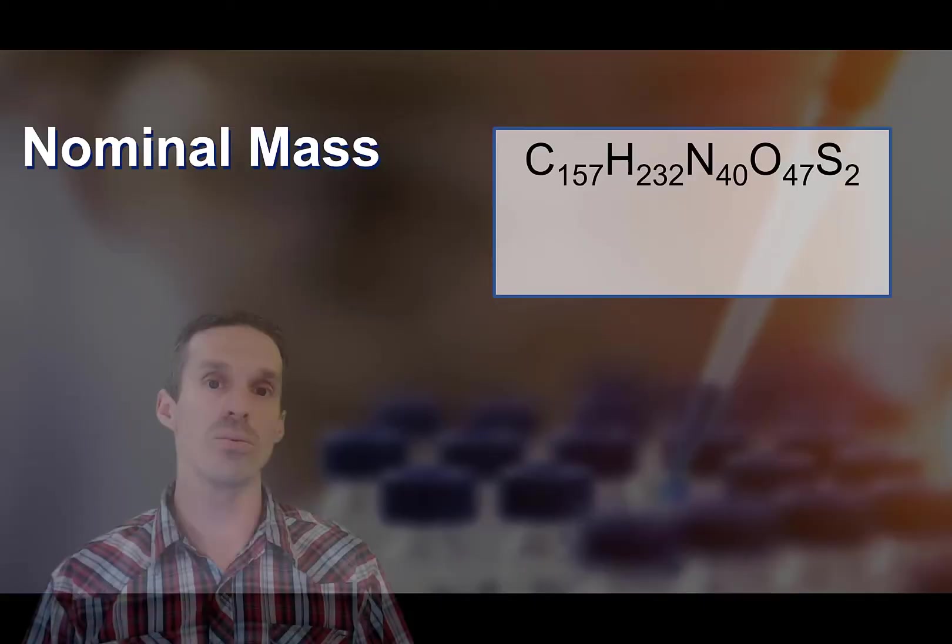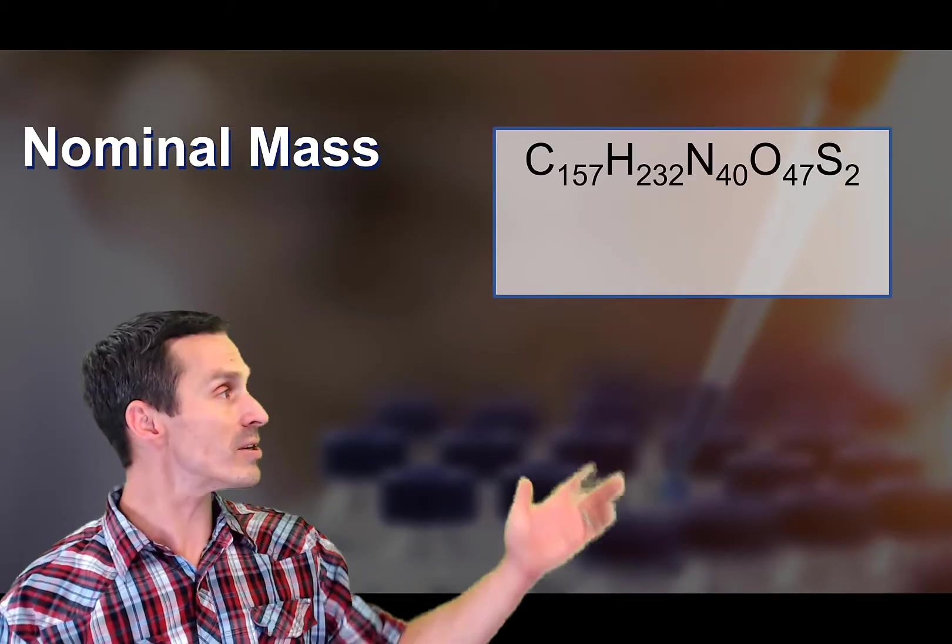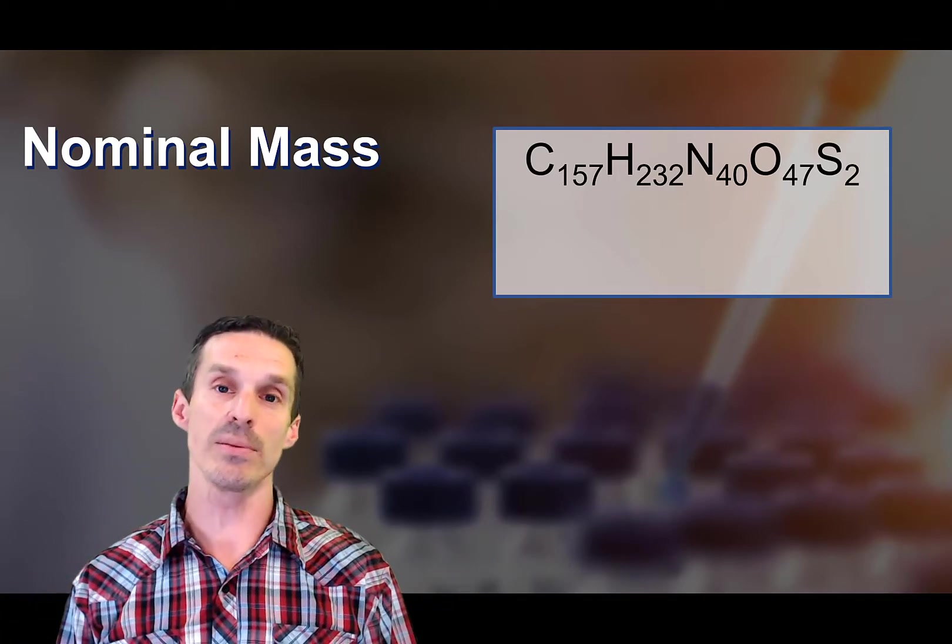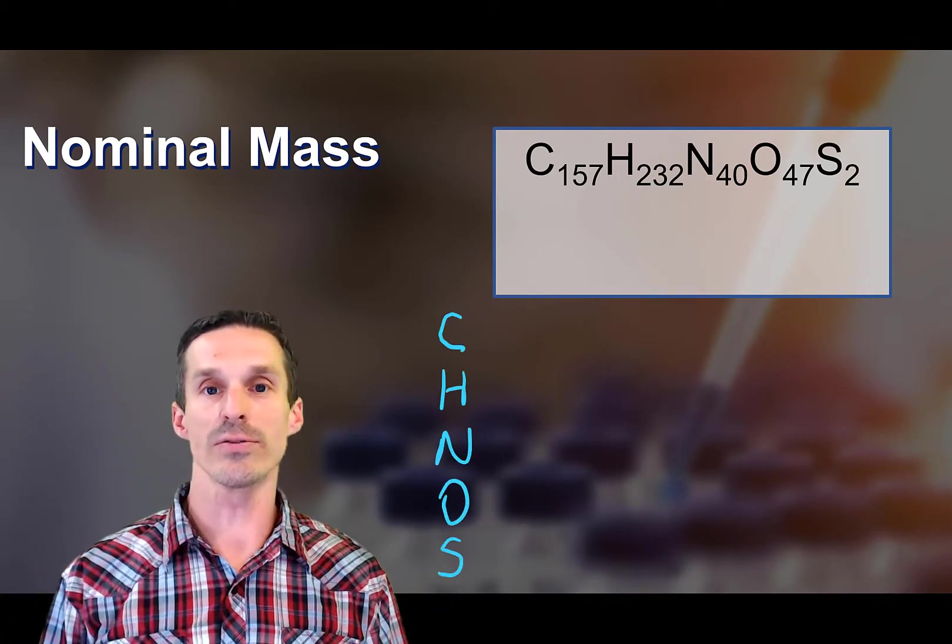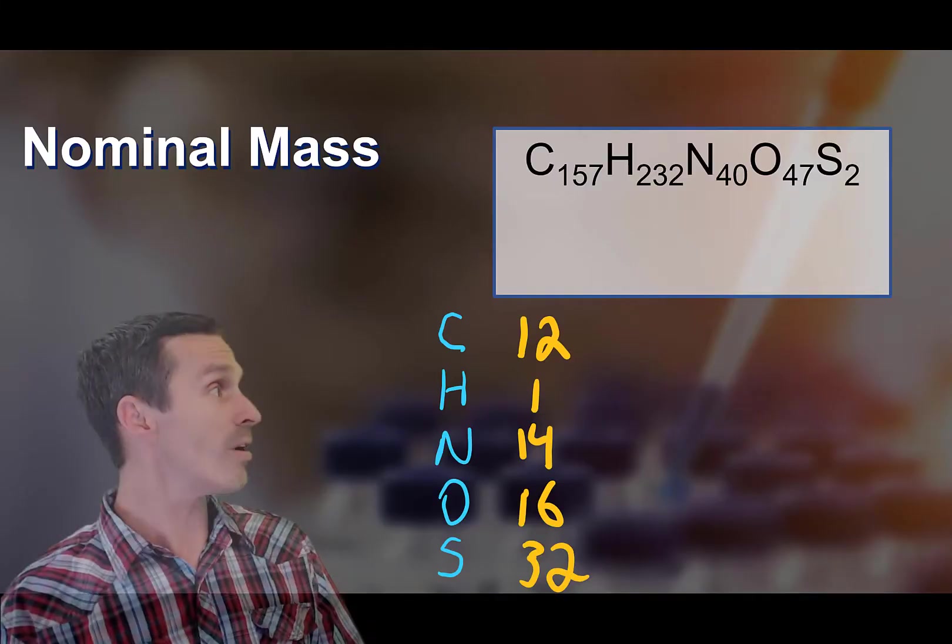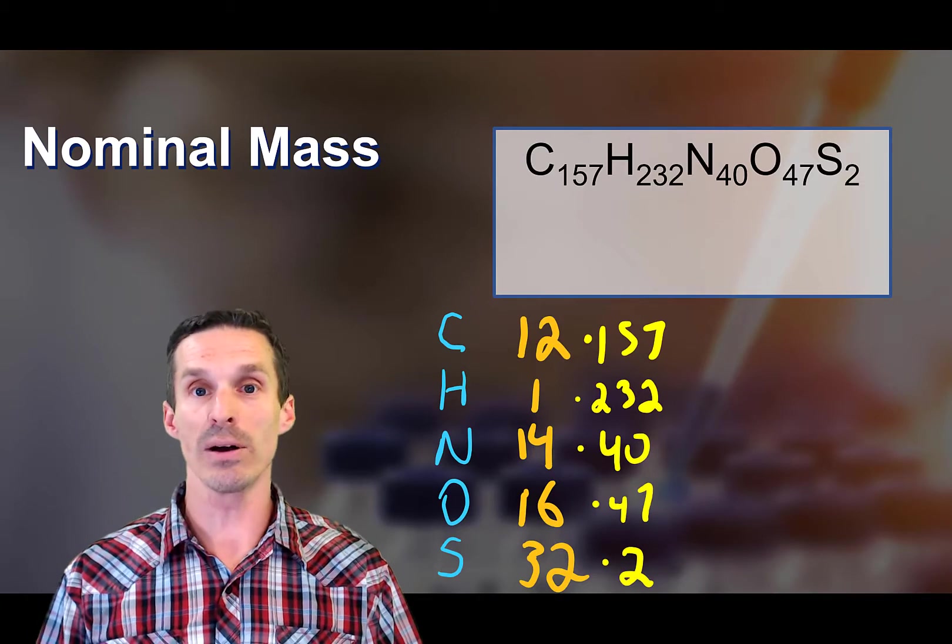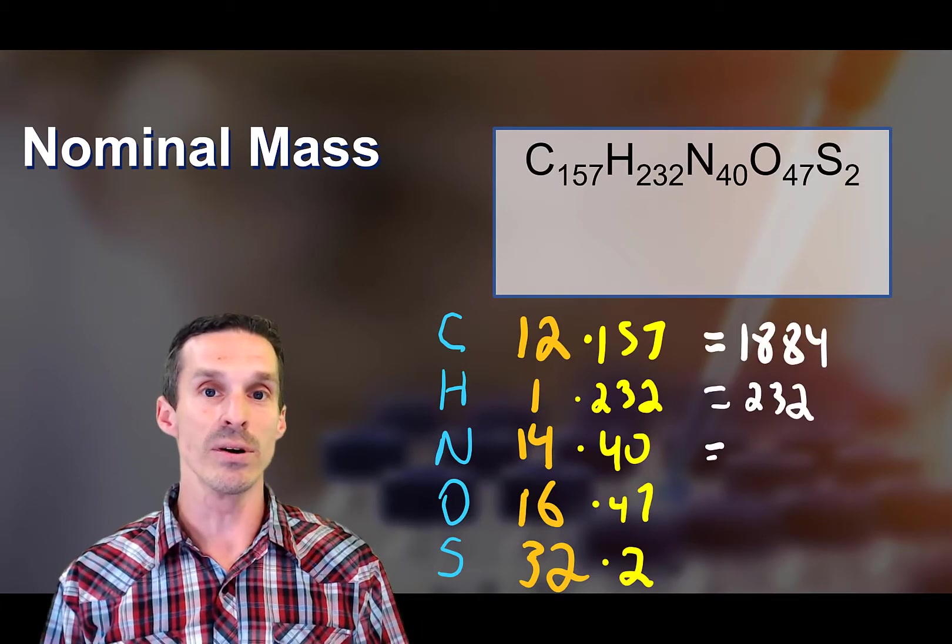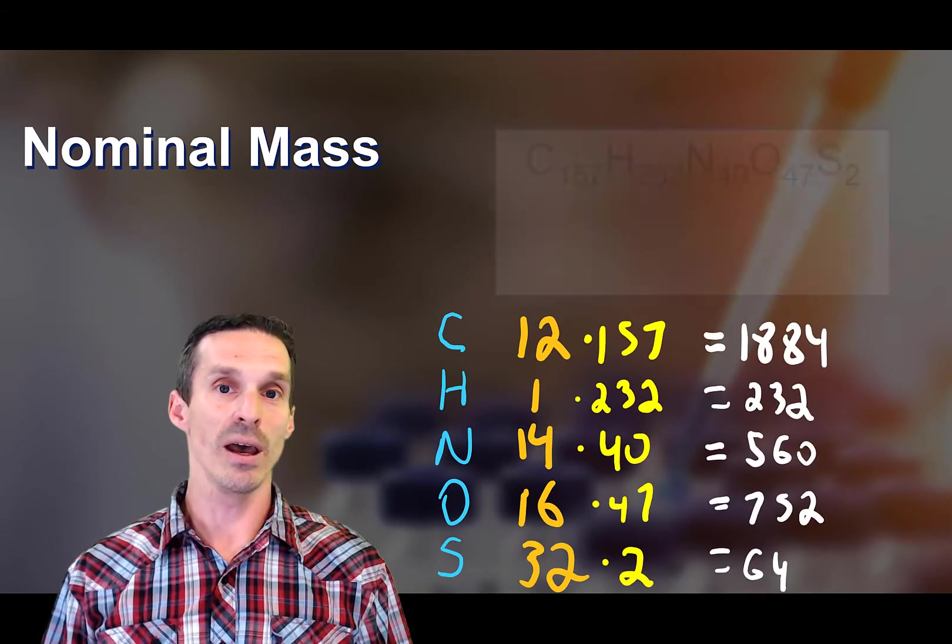So what do we do to calculate? Well this is a shortcut, the nominal mass is simply taking integer values. So for carbon we're dealing with 12, hydrogen is 1, nitrogen 14 and so on. A rough calculation for the mass would come out to be just multiplying this through, nothing complicated here.